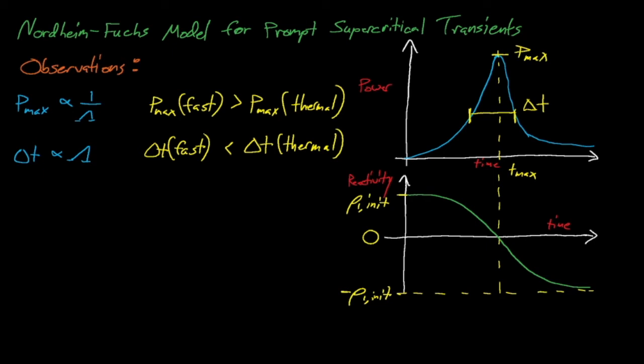The energy released from a prompt supercritical transient, Q, is proportional to the dose received by any personnel around the system during the accident. Q is roughly equal to P max times delta T, and since delta T is proportional to lambda and P max is inversely proportional to lambda, this means that the energy release, Q, is mostly independent of lambda. So fast and thermal systems will both release around the same amount of energy during an accident.